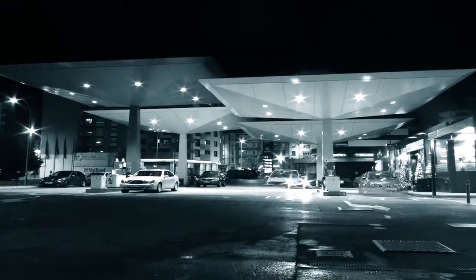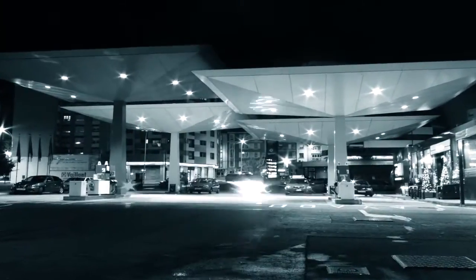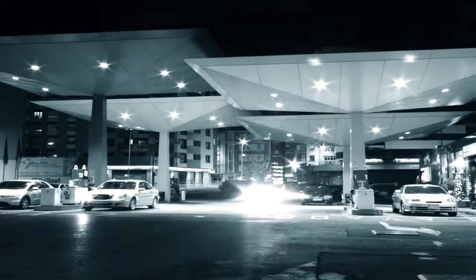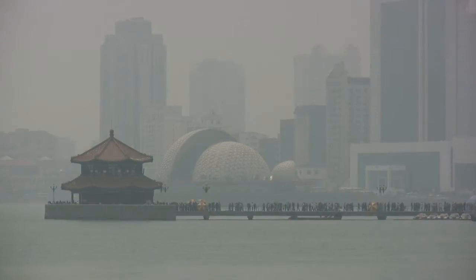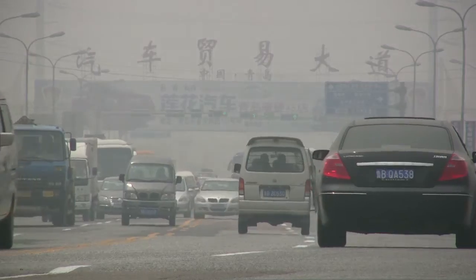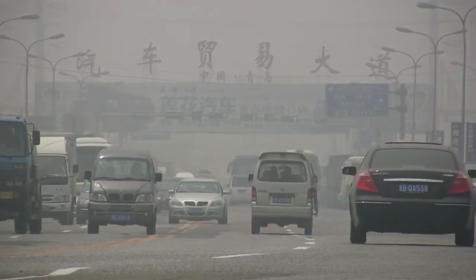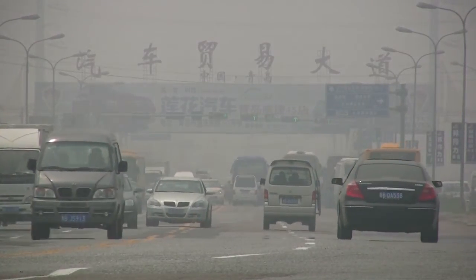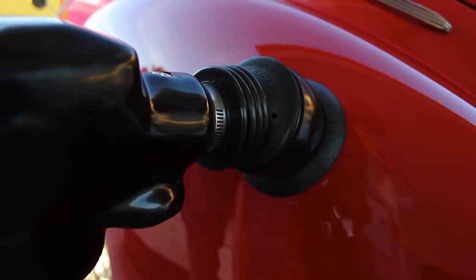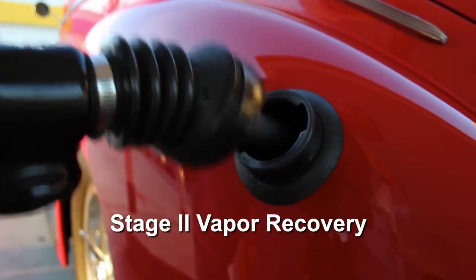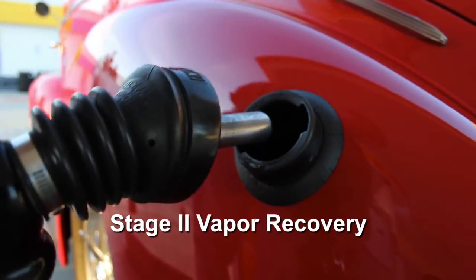In much of the world, every time a vehicle is refueled, volatile organic compounds or VOCs enter the atmosphere and photochemically react to form ozone and PM2.5. Since these emissions pose a threat to human health and are costly, some nations and metropolitan areas have elected to add stage 2 vapor recovery systems to their gasoline dispensing facilities.